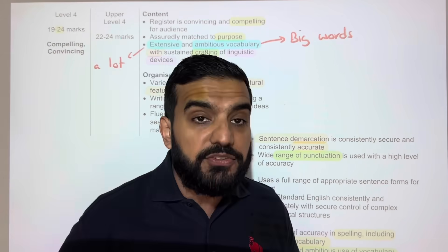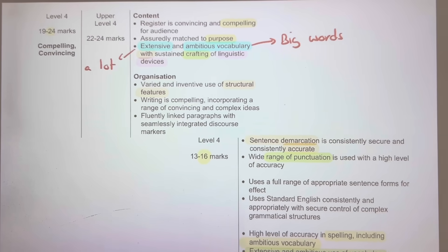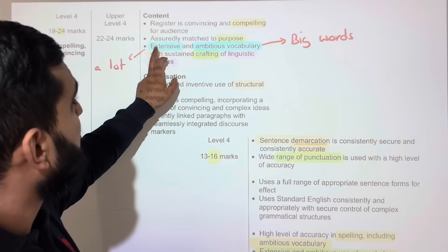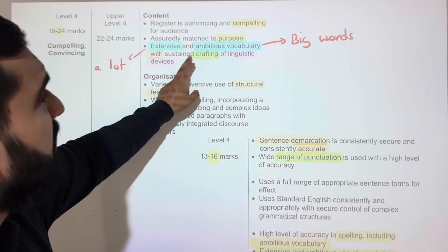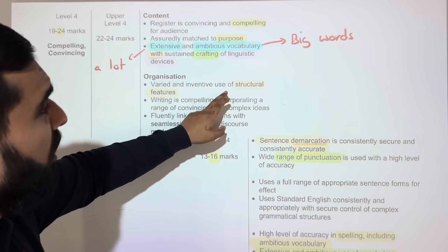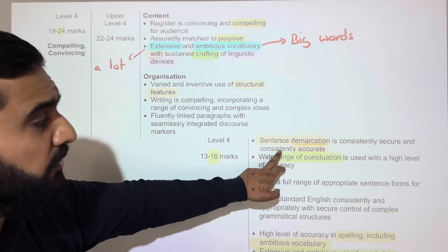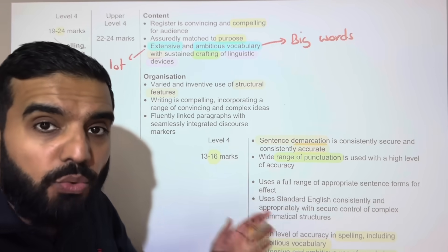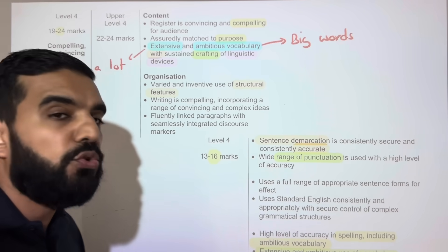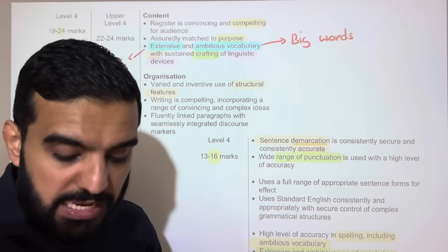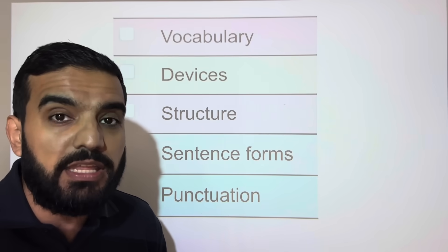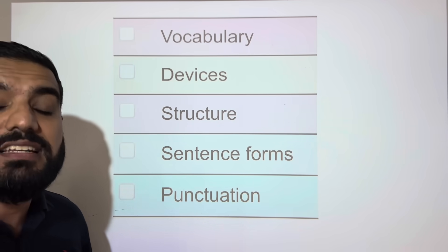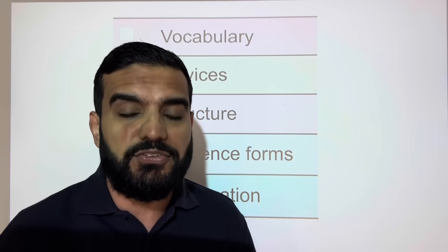The mark scheme on the board clearly tells us: your writing must be interesting, must have ambitious vocabulary, good quality language devices, structured features, commas and full stops, punctuation, and good spelling. Where does it talk about setting, plot, or character? It doesn't. The exam board's own website uses these key words: vocabulary, devices, structure, sentence forms, and punctuation.